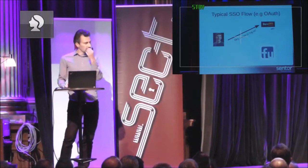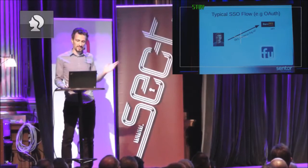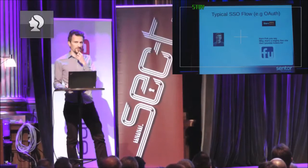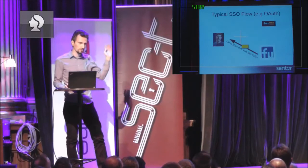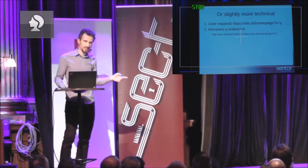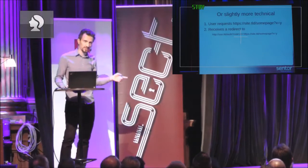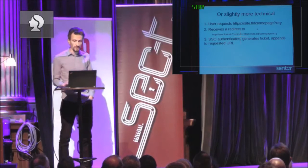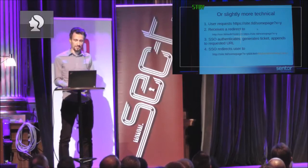In a typical single sign-on flow, a user goes to some site they want to authenticate to. That site says, 'I don't know you — go to your single sign-on partner and bring a ticket back, and then maybe I'll let you in.' The user goes to the single sign-on partner, which says, 'I see you want to visit that site — that's one of the sites I trust and authenticate for, so here's a ticket. Go bring that to the site.' In technical terms, the user goes to a URL at that site, the site redirects to the SSO, the SSO looks at the redirect URL parameter — that's the one it's authenticating you for — and if it likes this URL, it creates a ticket, appends it to the URL, and sends the user on its way.